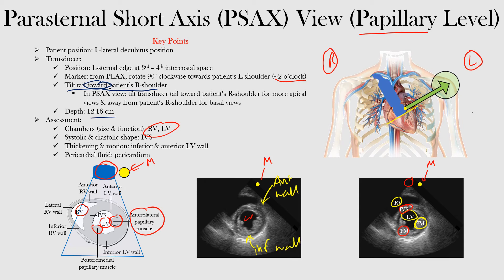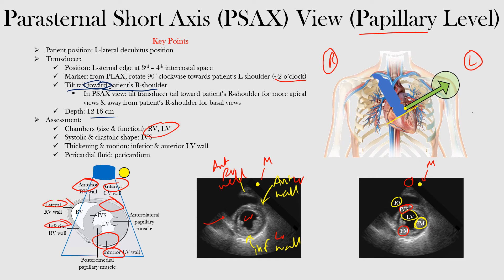The inferior wall is this portion here, and then the anterior wall is that there — so that's the anterior wall of the left ventricle. We can also see somewhat of the anterior right ventricle wall, which is this one here — anterior RV wall, which is that portion. You can see the lateral sometimes, which would be here, not really so much in this image. And then you may see the inferior RV wall down here.